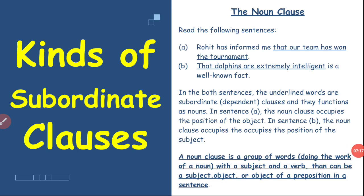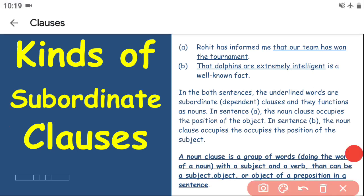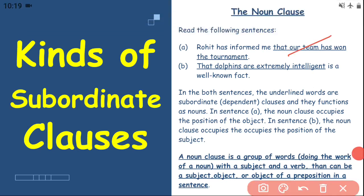Now we'll see the definition of a noun clause. A noun clause is a group of words that does the work of a noun, with a subject and a verb. It can function as a subject or an object, as we saw in the first example. In example B, 'that dolphins are extremely intelligent' works as a subject, while in example A, it works as an object.